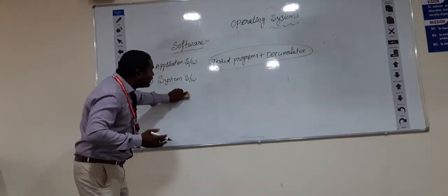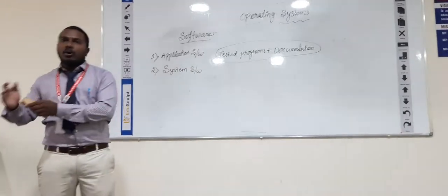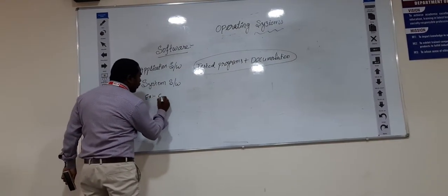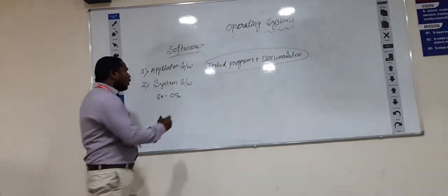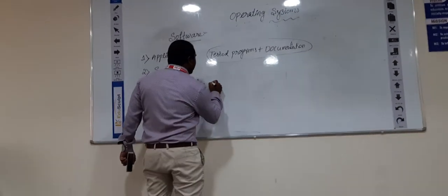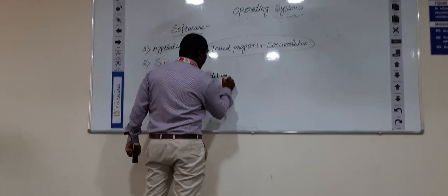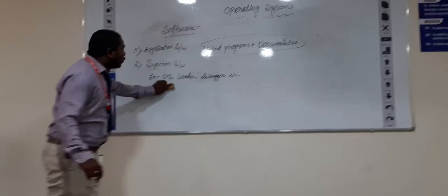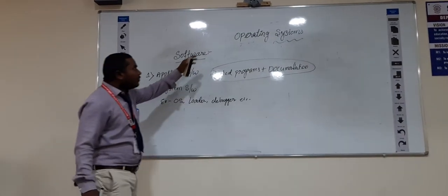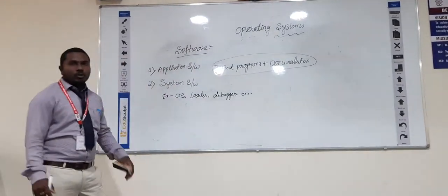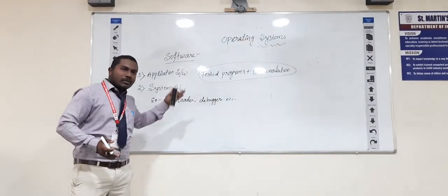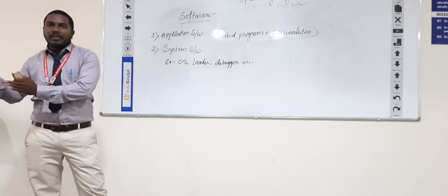System software supervises all computer products. For example, the operating system is one type of system software. A loader is also a type of system software. So we have two types of software: application software and system software. Coming to the operating system — an operating system is a software that acts as an interface between the user and the computer.